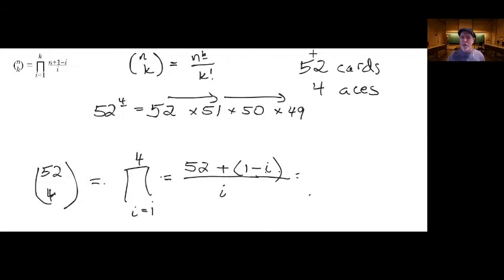So that means that our first term is going to be 52 over one. And our next term is going to be 51 over two. You recall why this is decreasing because we're increasing what we subtract from the 52.